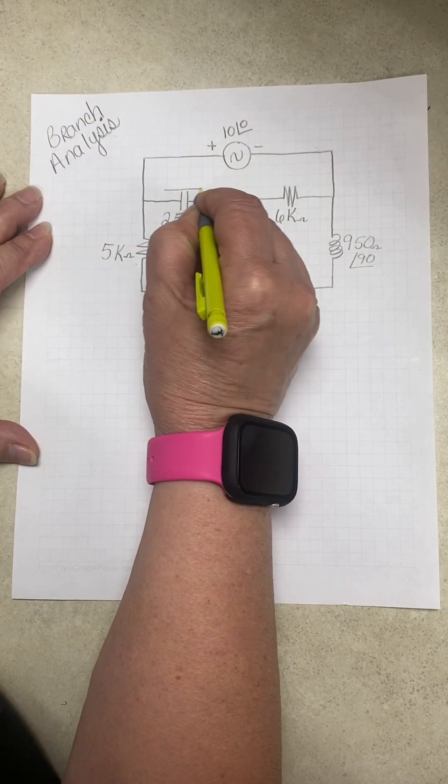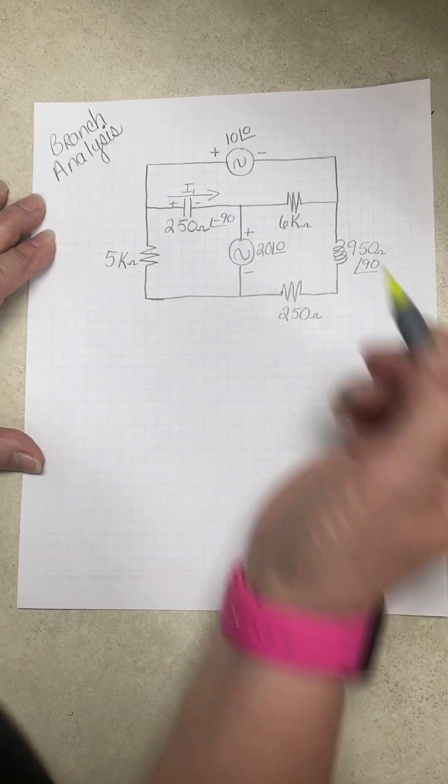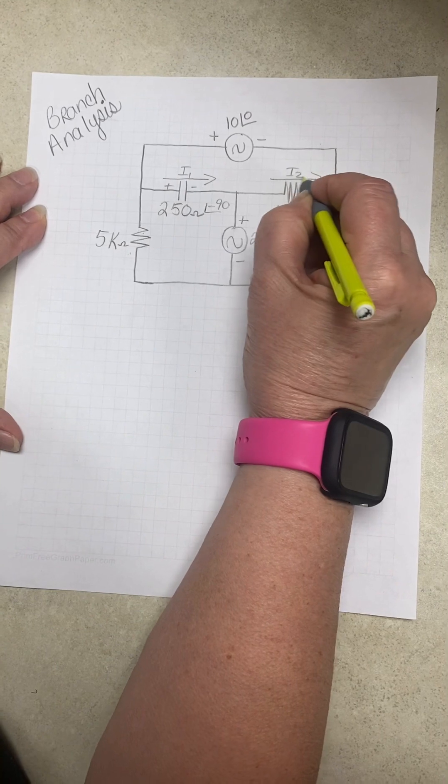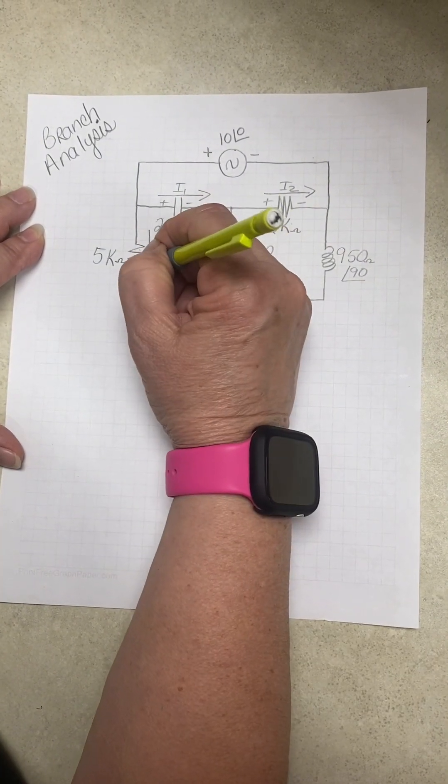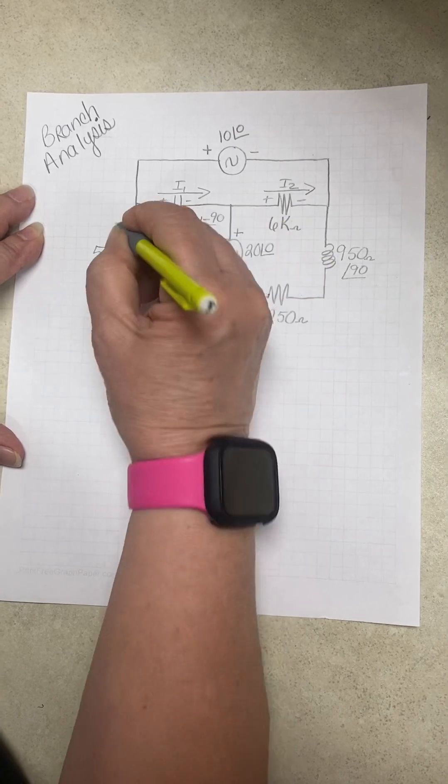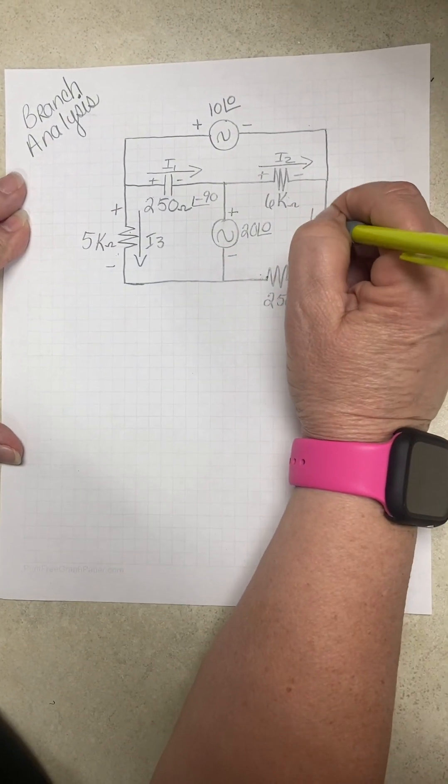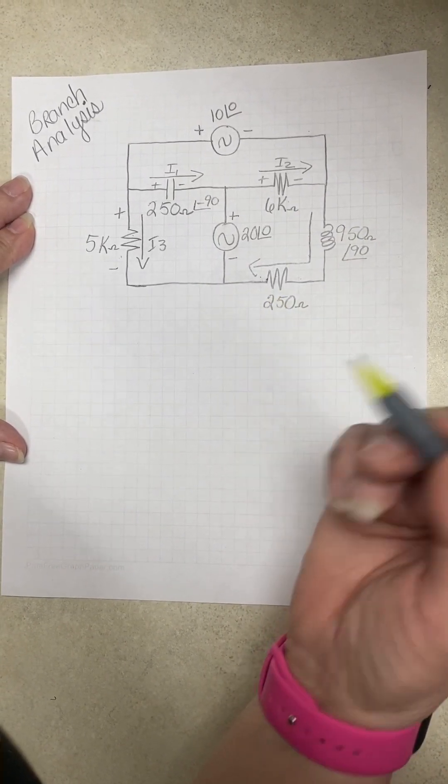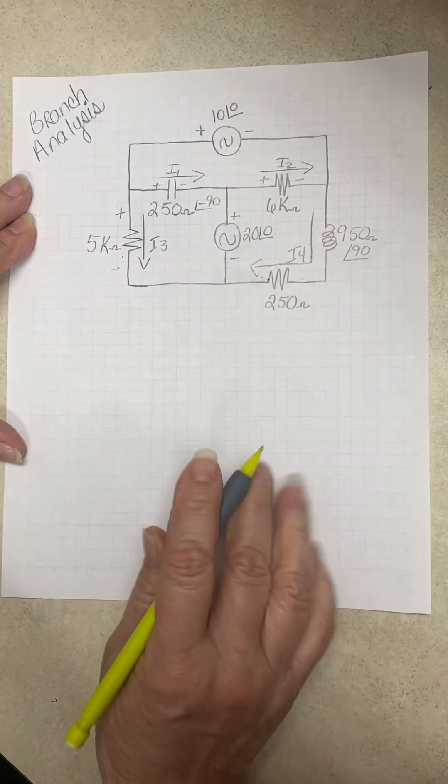So we actually have this one, I1 plus to minus, I2 plus to minus, I3 plus to minus, and this would be I4, because they're in series. And what are we solving for when we're solving for branch? Current. So they would have the same current.